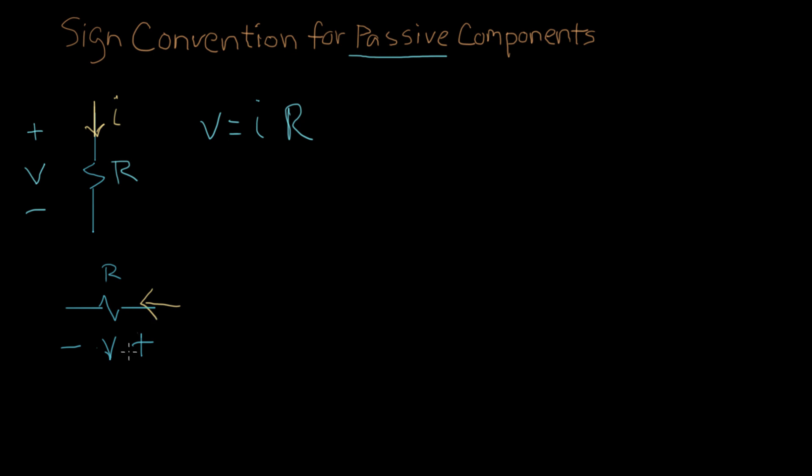Well, the current goes in the positive end. So it goes in that way. And that's the sign convention for passive components. The current goes into the voltage on the positive terminal of the voltage. If I drew the arrow over here like this, that would still mean the same thing. It's still going in the positive and coming out the negative side.